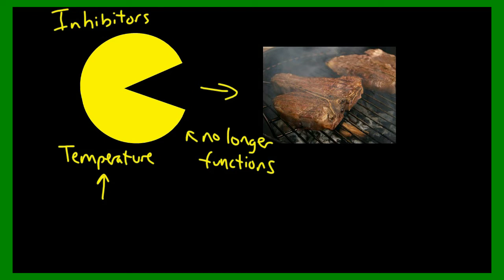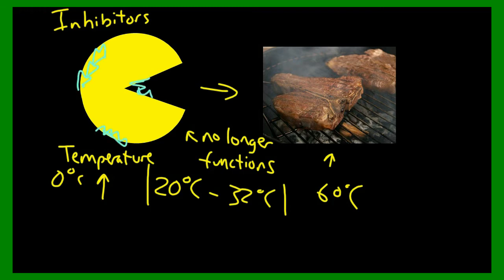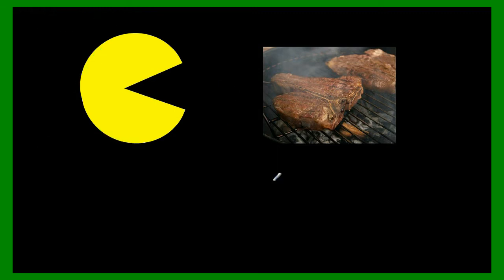Oftentimes enzymes have a range of temperatures, which means they go from like, let's say 20 degrees Celsius to 32 degrees Celsius. And they only work within that specific range. If it gets too hot, like 60 degrees Celsius, it gets cooked. If it gets too cold, like zero degrees Celsius, it gets frozen. Let's draw some ice on this enzyme. It can't work when it's too hot or too cold. So inhibitors affect enzymes, temperature affects enzymes, and finally pH can affect enzymes.